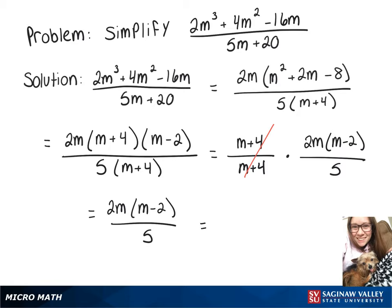And then we can multiply the top part out, which gives us 2m squared minus 4m over 5.